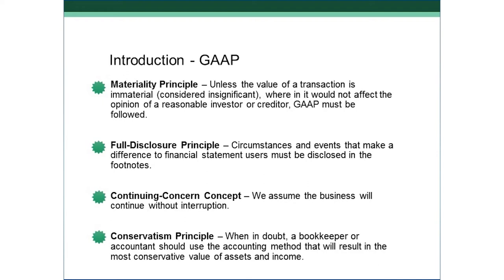The continuing concern concept is a pretty simple concept — it means that our business is going to go on forever without interruption, and we always assume that. The reason is that if we didn't assume this, we would have different accounting practices. If I knew I was closing my doors next month, a car I recorded at cost wouldn't be worth cost anymore — it would be worth whatever I could sell it for on the open market. So our assumption is always that things stay at cost and the business goes on indefinitely.